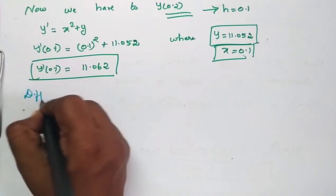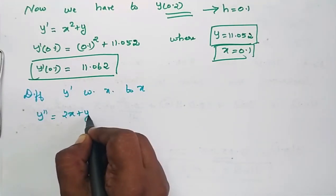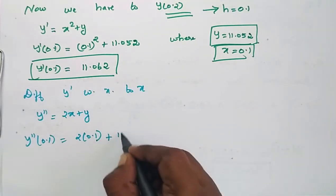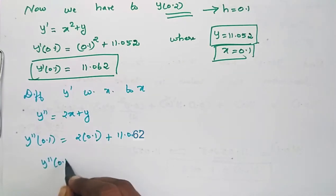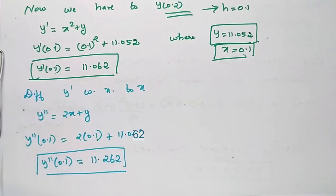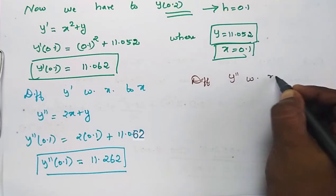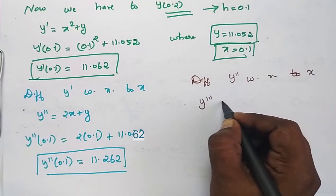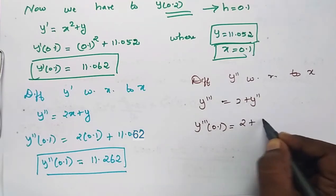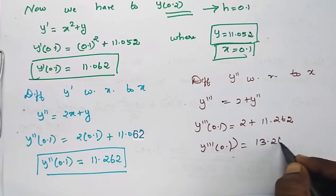Differentiating y' gives y'' = 2x + y', so y''(0.1) = 2(0.1) + 11.062 = 11.262. Then differentiating y'' gives y''' = 2 + y'', so y'''(0.1) = 2 + 11.262 = 13.262.